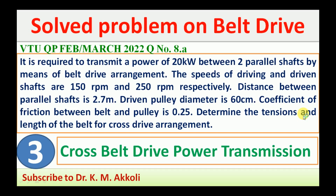The speeds of the driving and driven shafts are 150 rpm and 250 rpm respectively. The distance between the parallel shafts is 2.7 m. The driven pulley diameter is 60 cm. The coefficient of friction between the belt and pulley is 0.25. Determine the tensions and length of belt for a cross drive arrangement.